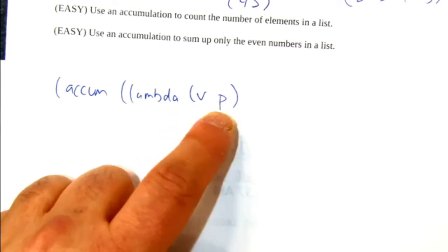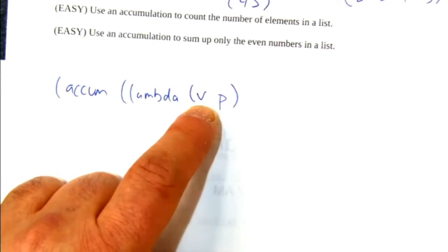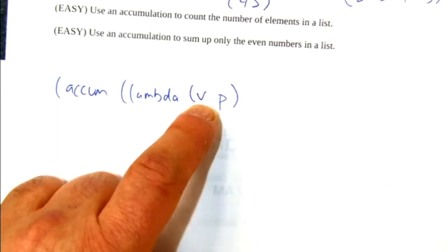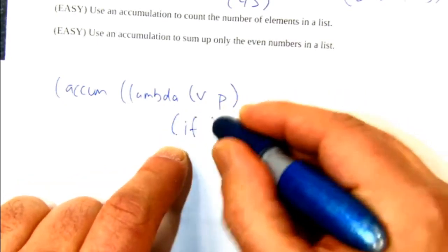So pretty much what we have to do is we have to tell... And V is the number we're going to conditionally add in right now. V is the number we're working on right now. And so we're going to test if V is even.